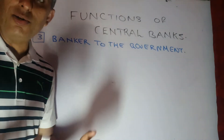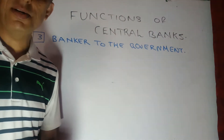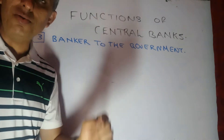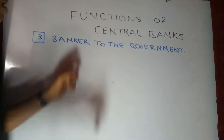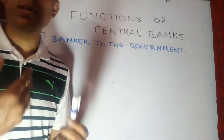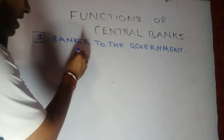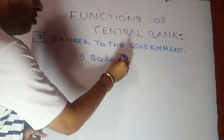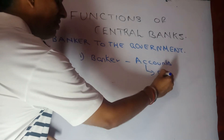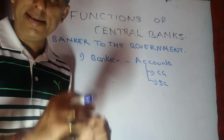Let's move ahead into another function which the central bank, in our case RBI, performs. In this video, we are going to focus on its job towards the government. This function is referred to as the 'Banker to the Government' function. As a banker, the first thing RBI does is maintain accounts — not only of the central government but also of state governments and their various institutions.